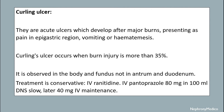Curling ulcer: these are acute ulcers which develop after major burns, presenting as pain in the epigastric region, vomiting, or hematemesis. Curling ulcer occurs when burn injury is more than 35%. It is observed in the body and fundus, and not in the antrum and duodenum.